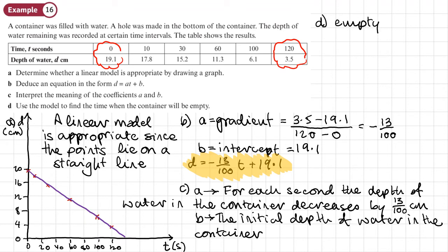Now, the container will be empty when the depth of water is 0. So empty in the context of this question means that D, the depth, is 0. So we're just going to put 0 into this equation here and work out T. So we'll have that 0 equals negative 13 over 100 T plus 19.1. So it's just about now rearranging this to find out what T is.